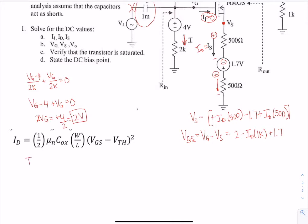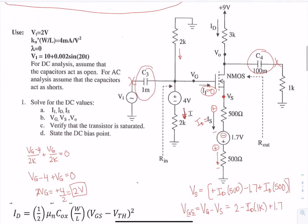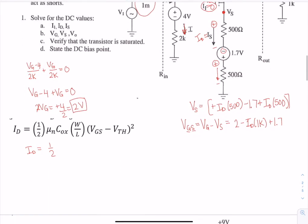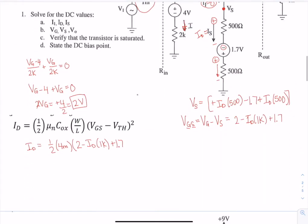So we can rewrite this in the ID equation. ID will be equal to 1/2 mu_n C_ox W over L. This is given as 4 milliamp per volt squared. So we have 4 milli, and VGS is going to be 2 minus ID times 1k plus 1.7, and then minus VTH. VTH is given as 2 volts, so minus 2, squared.